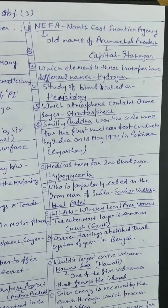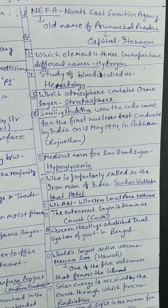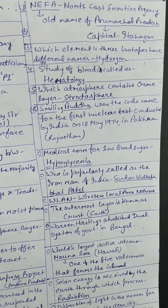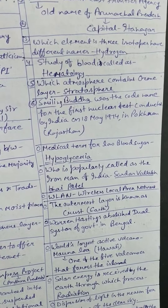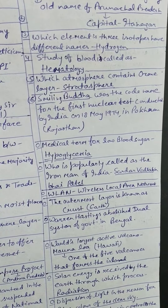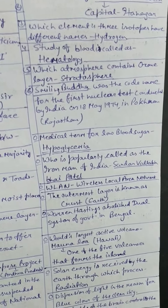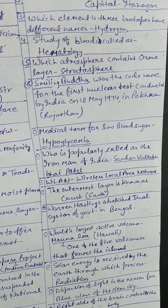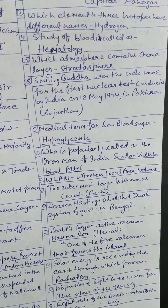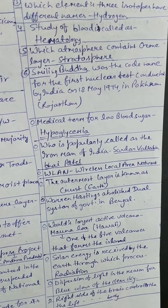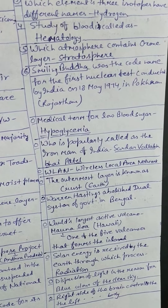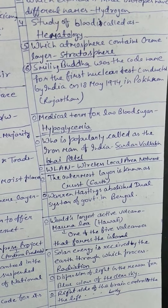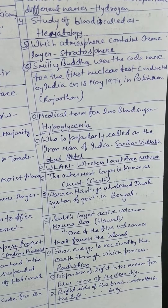Hydrogen is the element whose three isotopes have different names. The study of blood is called hematology. The atmosphere layer that contains the ozone layer is the stratosphere.